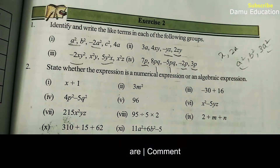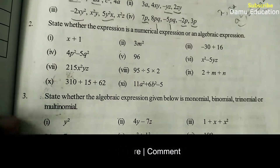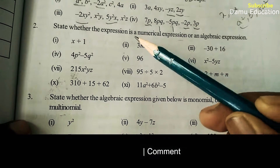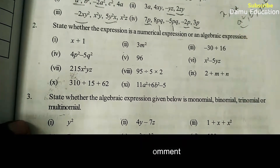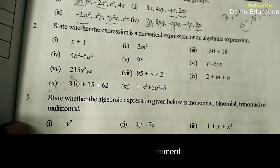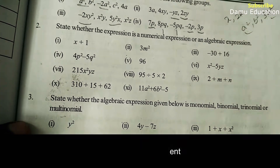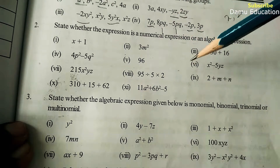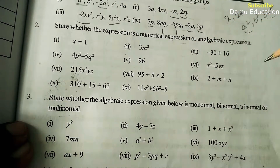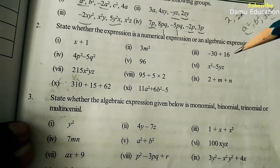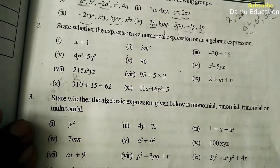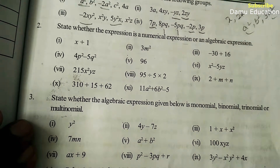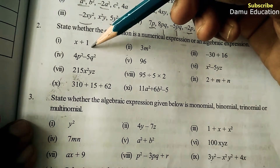Next, state whether the expression is a numerical expression or an algebraic expression. If it is a numerical expression, everything will be in numbers — addition, subtraction, division — there is no variable, no alphabet.